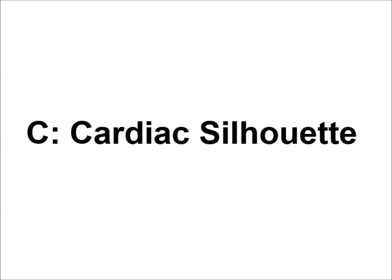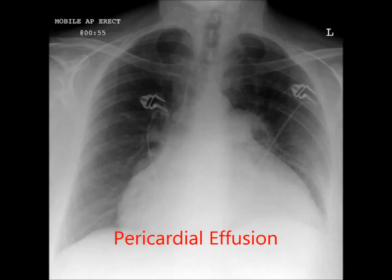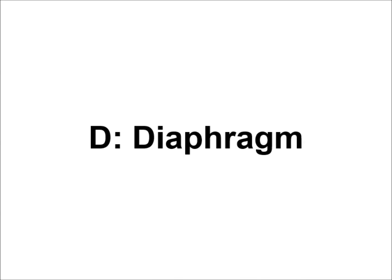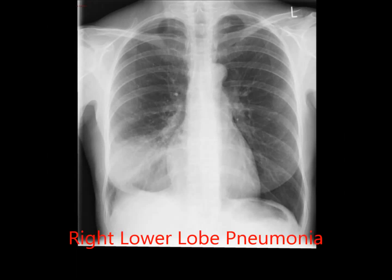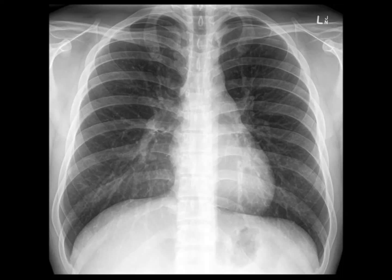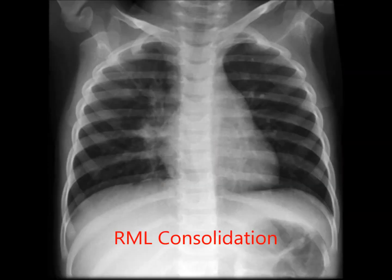C is the cardiac silhouette. On a PA film, the heart should be less than half of the chest width. An enlarged cardiac silhouette is most commonly caused by cardiomegaly; pericardial effusion is another important cause. D is the diaphragm. A normal diaphragm has a sharply visible border, curves downwards at the edges, and the costophrenic angles should be clearly visible, as should the cardiophrenic angles. A poorly defined hemidiaphragm might be due to a lower lobe consolidation, whilst a blunted costophrenic angle is likely due to a pleural effusion. E is the edge of the heart — here you're looking for the silhouette sign. The right heart border touches the right middle lobe, while the left heart border touches the left upper lobe; these borders may be less well defined if there is consolidation in these lobes.